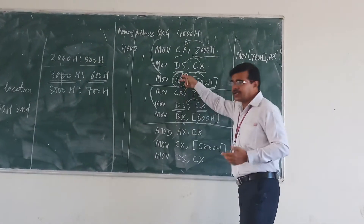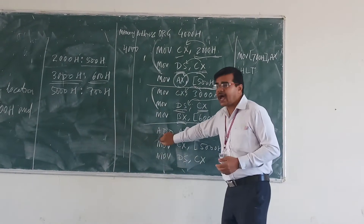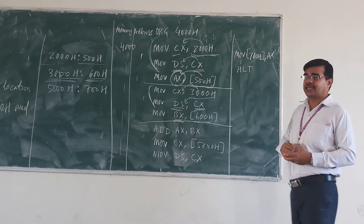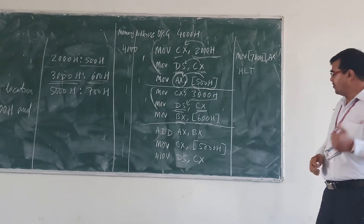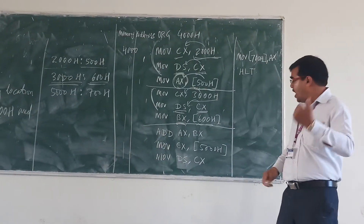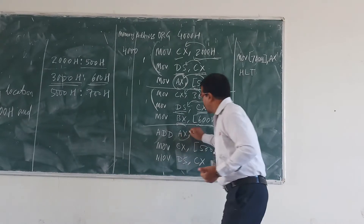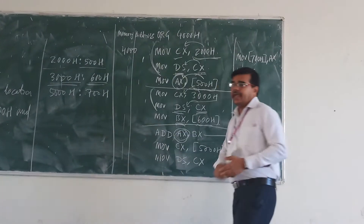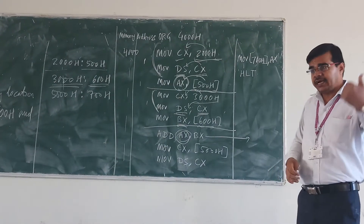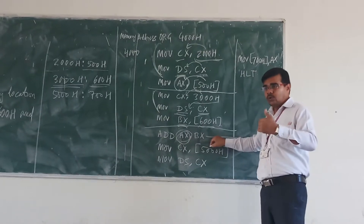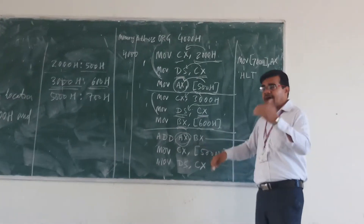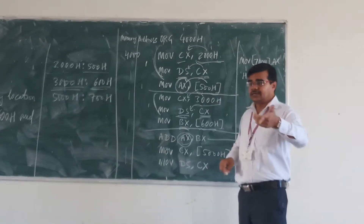These two data values are now in our registers. We go for the addition operation: ADD AX, BX. Whatever content is in the AX register and BX register are added together. The result is stored in AX. Previously AX had data 1 and BX had data 2; after the addition, BX still holds data 2 and AX holds the result.